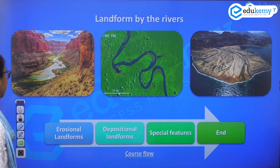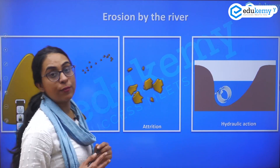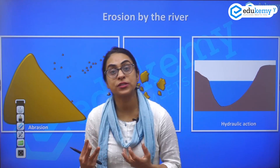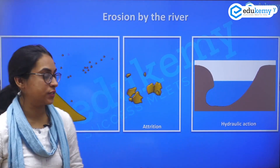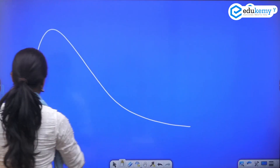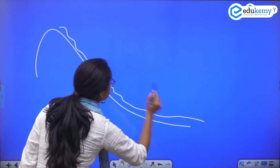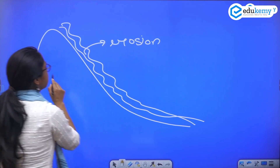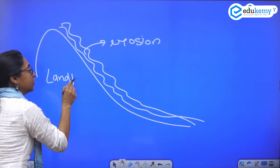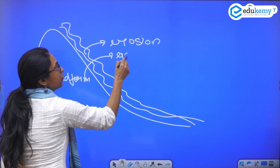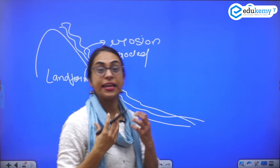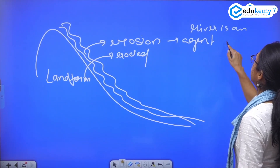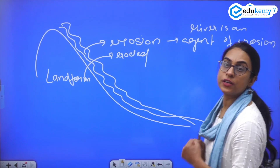Let's first start with the erosional landforms. Before we do, let's understand what the erosional processes of the river are. As the river moves, the landform is eroded. The river is acting as an agent of erosion.